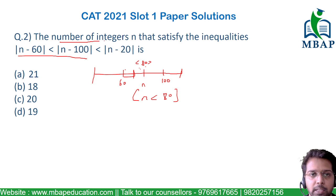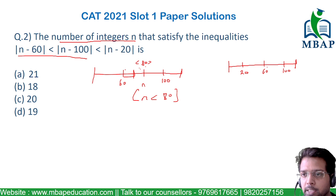Now let's look at the next part where we have to check |n-100| < |n-20|. Let's try to plot these values. Put 20 somewhere here and 100 here. The equidistant point here would be 60. 60 to 20 is 40, 60 to 100 is also 40.